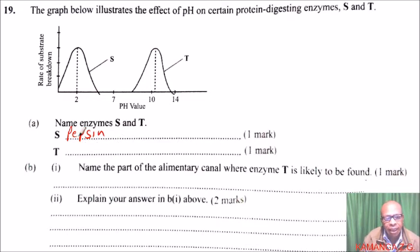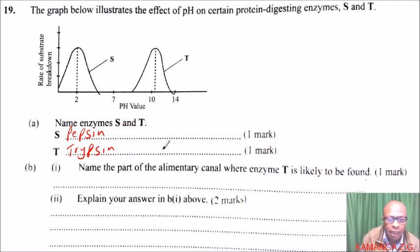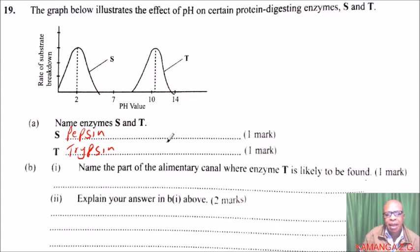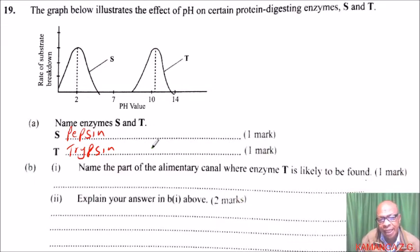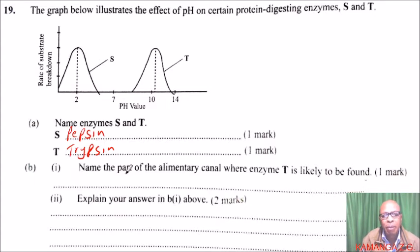Enzyme T is trypsin. Trypsin is an enzyme that aids in digestion and it is found in the small intestine. Part B, roman numeral one, asks us to name the part of the alimentary canal where enzyme T is likely to be found.